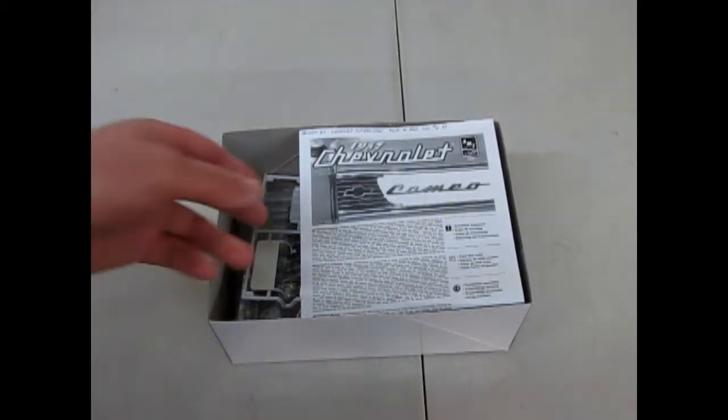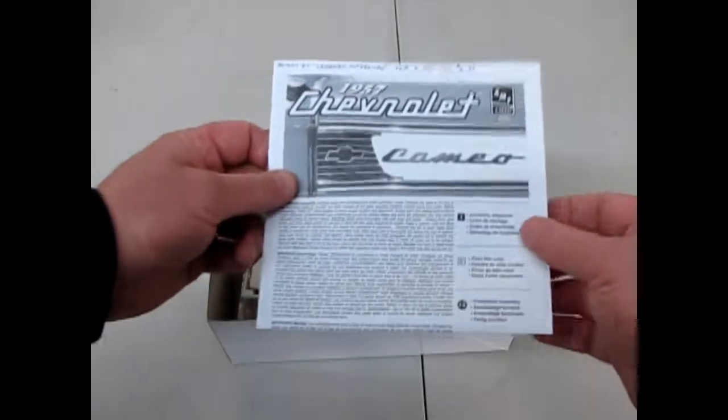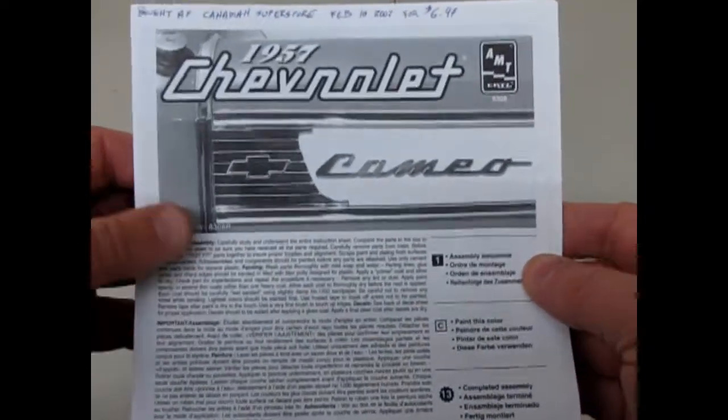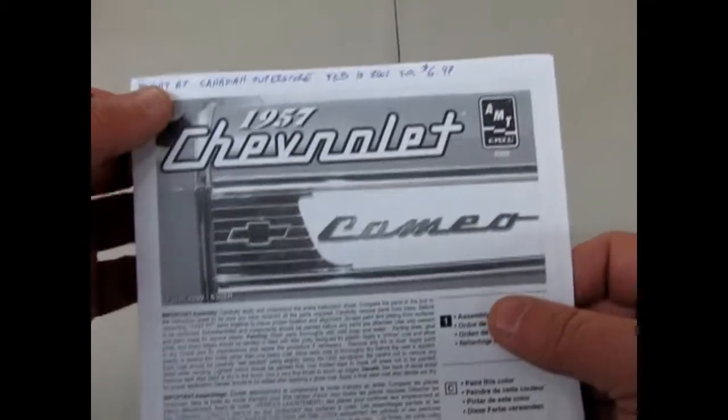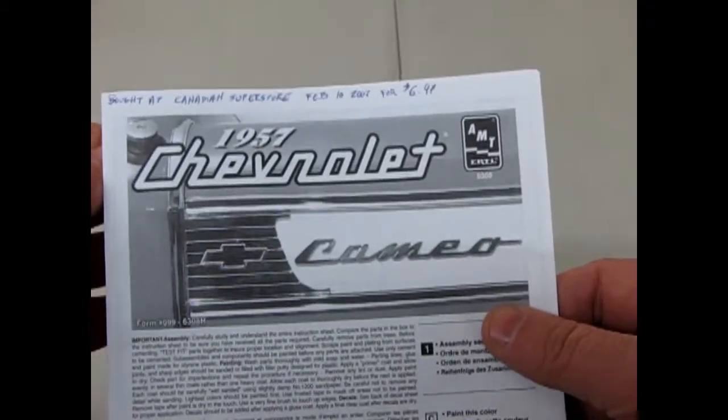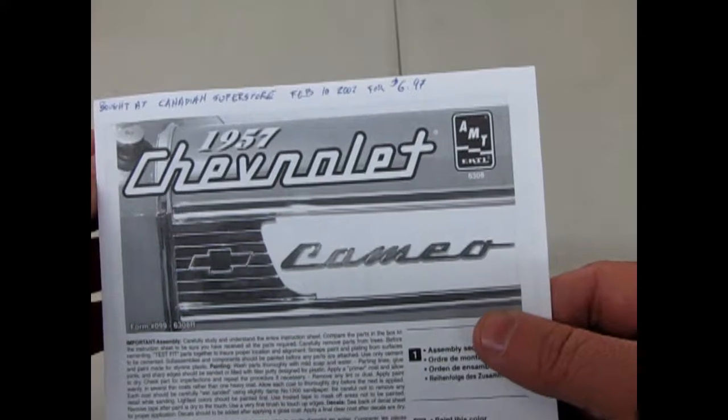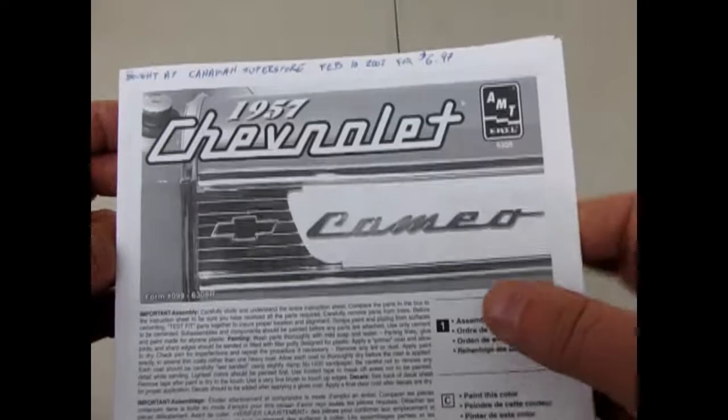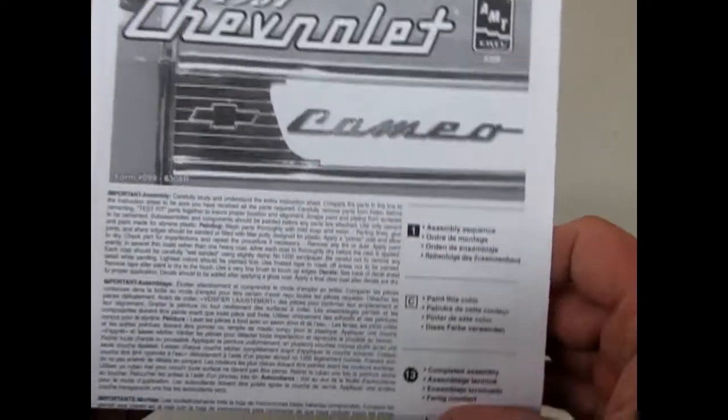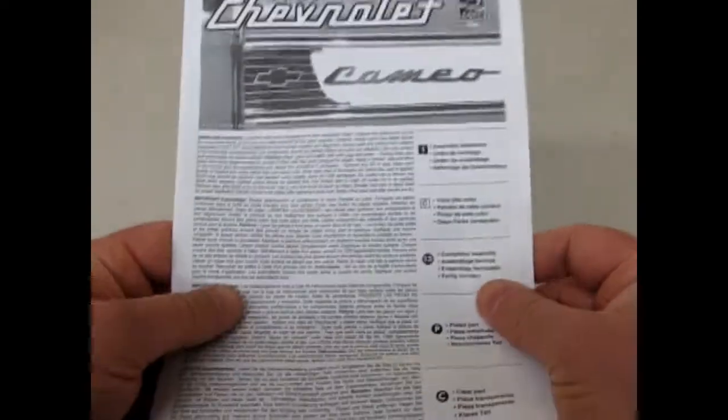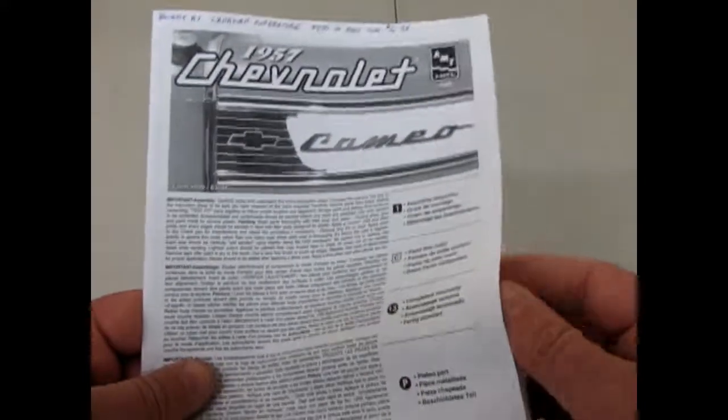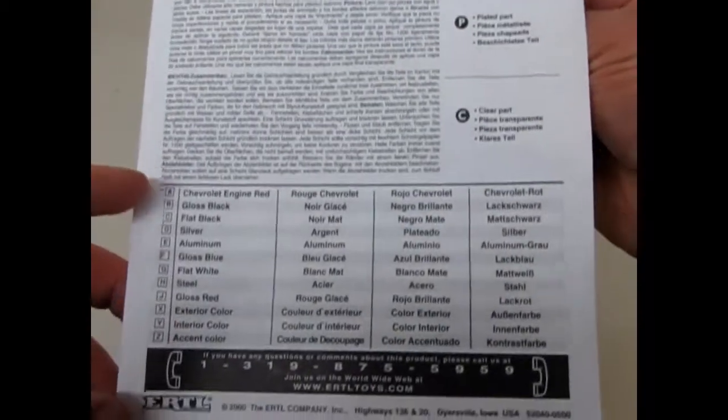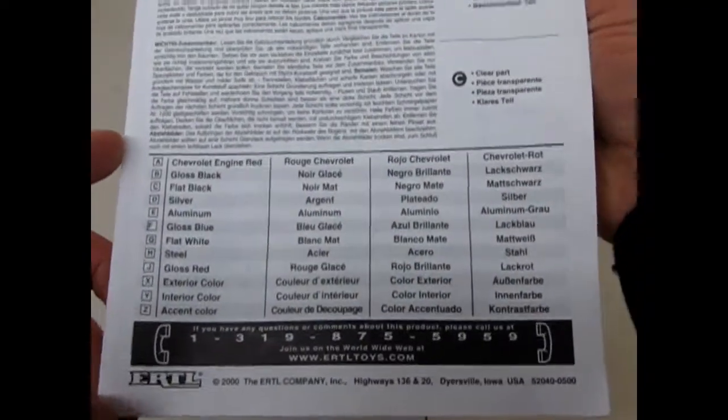This is one of those ones where they were competing with Ravel Monogram to see which company could build a better, more detailed model kit. So these trucks are a real treat. I bought this one at the Canadian Superstore back in February of 2002 for $6.97. Now Canadian Superstore is a grocery store and they don't sell these anymore. I do believe the current pricing for 2018 is about $30, $32 Canadian. But these kits are worth it.